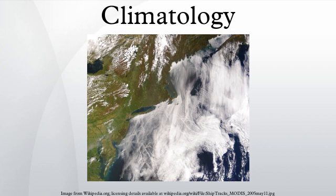Climatology or climate science is the study of climate, scientifically defined as weather conditions averaged over a period of time. This modern field of study is regarded as a branch of the atmospheric sciences and a subfield of physical geography, which is one of the Earth sciences. Climatology now includes aspects of oceanography and biogeochemistry.